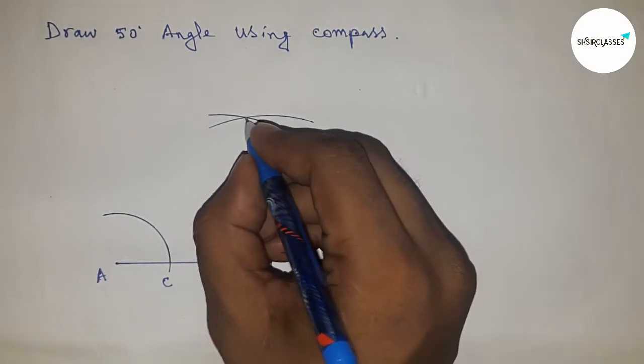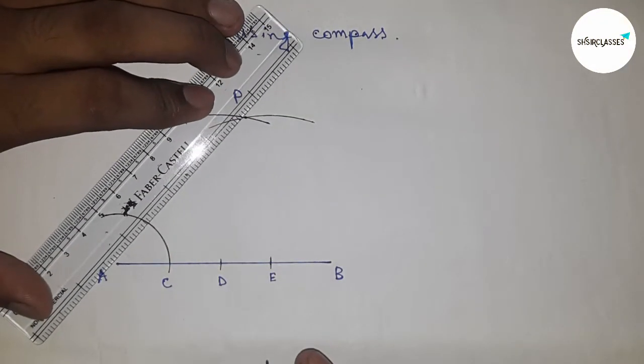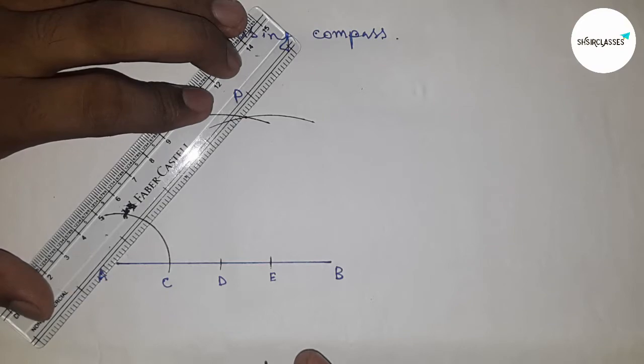They cut each other at a point. This is point P. Next, join P and A.